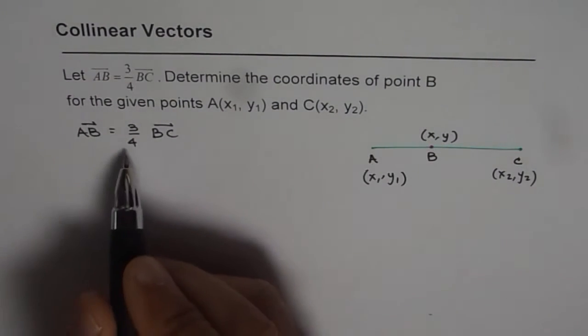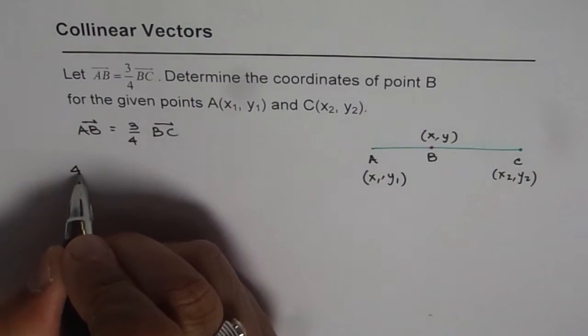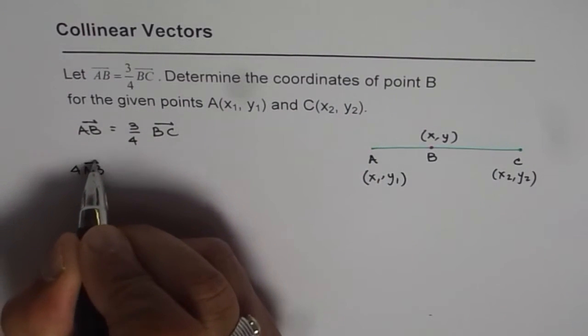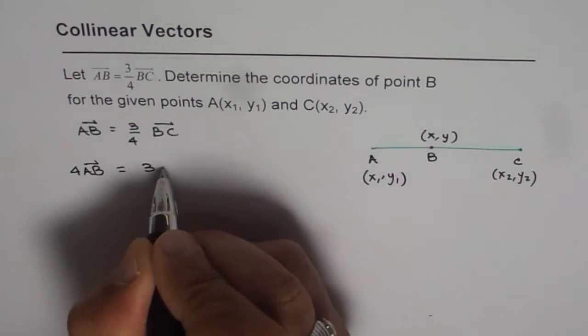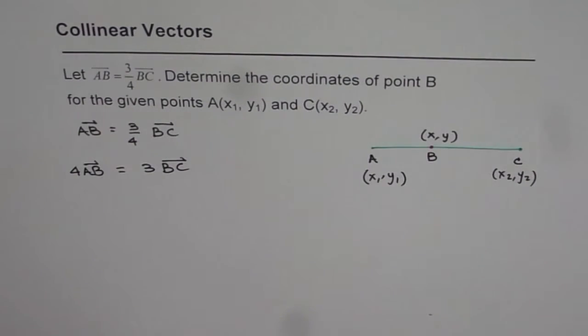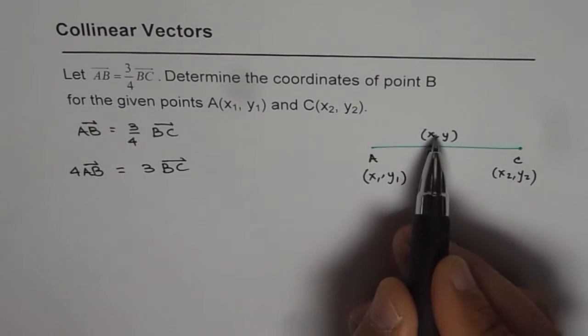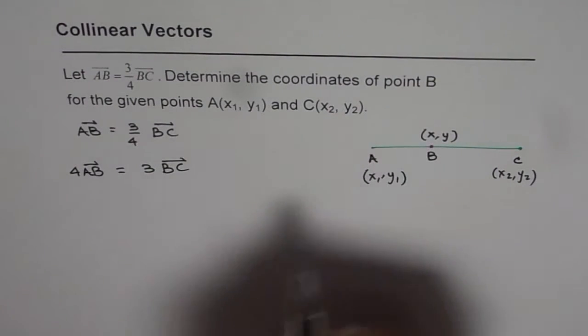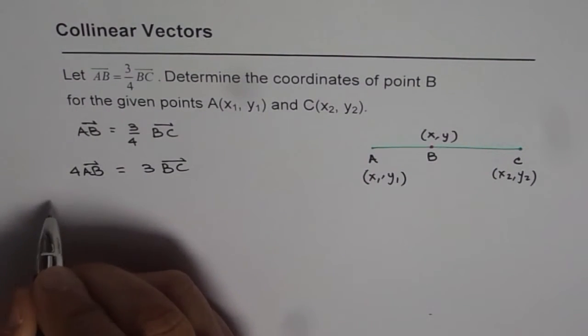From here we can write 4AB equals 3BC. Now what is AB? A to B is x minus x₁. We will use vector algebra to solve this further.